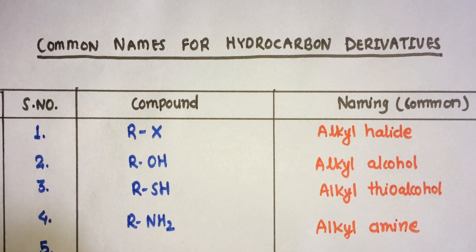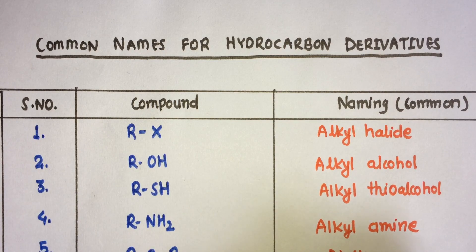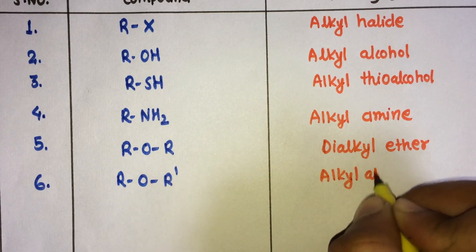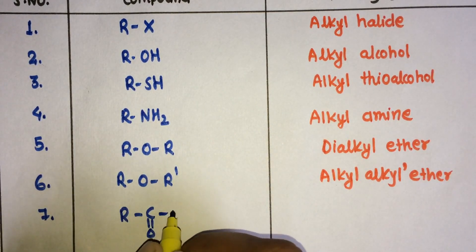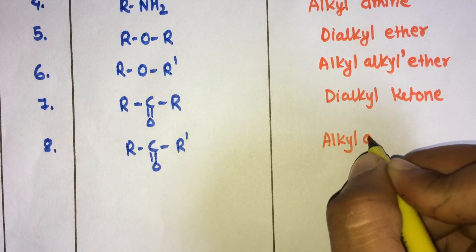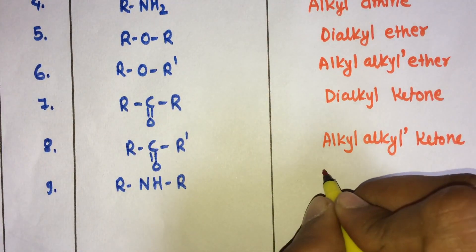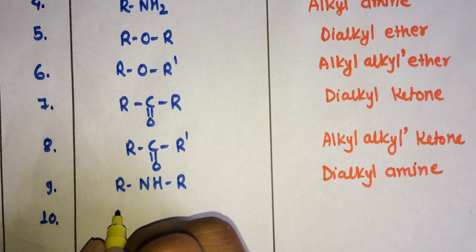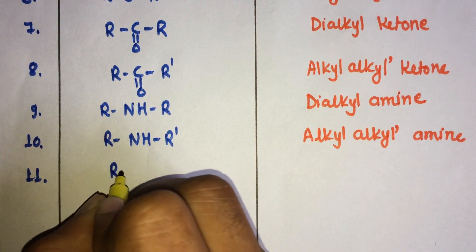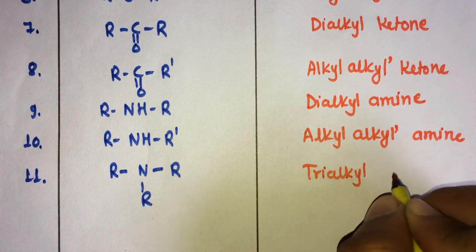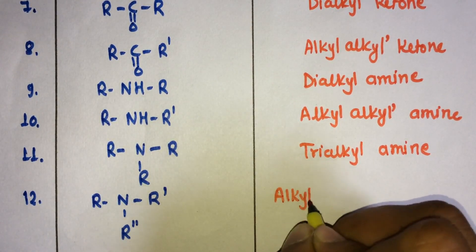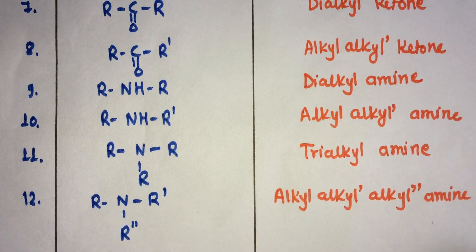The fourth is RNH₂, which is alkyl amine. ROR is dialkyl ether, and ROR' (where R is not the same) is alkyl-alkyl ether. RCO-R is dialkyl ketone, and a ketone having different R groups is alkyl-alkyl ketone. RNHR is dialkyl amine, and RNHR' (where R' is different) is alkyl-alkyl amine. Three different alkyl groups joined by a nitrogen form alkyl-alkyl-alkyl amine.